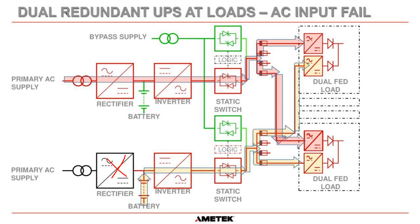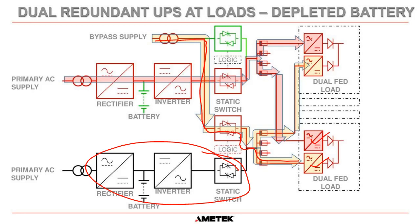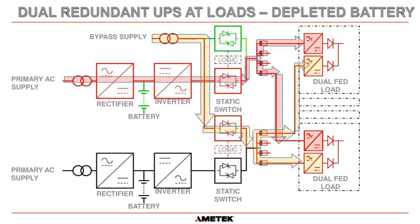If we have an AC input failure on one UPS, it will go to battery operation and both power supplies continue working. If the whole bottom UPS fails, it will switch to bypass, and you still have power going to both power supplies from the other UPS. You still have redundancy even if the UPS completely fails and transfers to bypass.